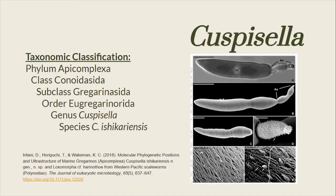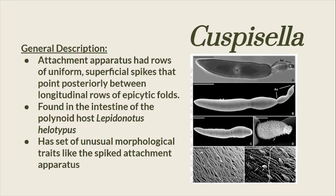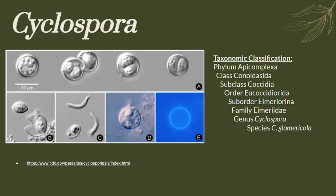Here is the taxonomic classification of the genus Caspicella. The attachment apparatus has rows of uniform superficial spikes that point posterior, placed between the longitudinal rows of epicytic folds. They are found in the intestine of the polynoid host Lepidonotus helotypus. It has a set of unusual morphological traits like the spike attachment apparatus.